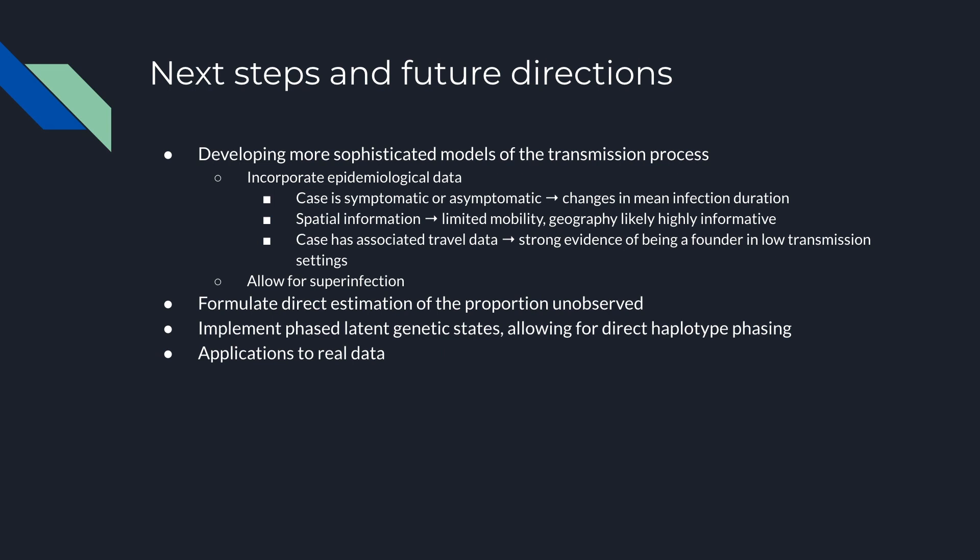Future directions for our model include more sophisticated treatment of the transmission process by incorporating informative epidemiological information and to explicitly allow for superinfection. We further plan to develop ways to directly estimate the proportion of infections that are going unobserved. Another natural extension would be to implement a phased latent genetic state, allowing for direct haplotype phasing. And finally, applying our approach to real data and demonstrating its utility. Thank you.